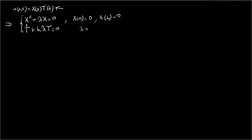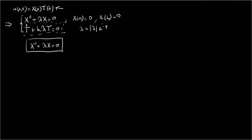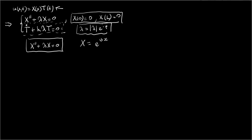We also know that there exists some constant lambda, which we assume to be a complex number. So let us now try to solve the first set of conditions, focusing on the equation for X. We have to solve the second-order linear ODE with constant coefficients X'' + λX = 0 with boundary conditions X(0) = 0, X(l) = 0. The solution is searched in the form X = e^(ωx), where ω is a complex number.